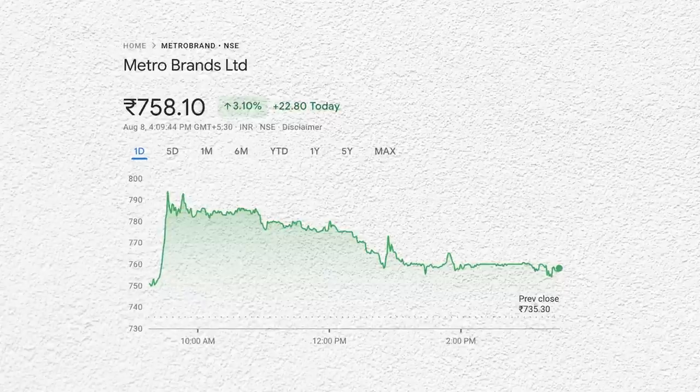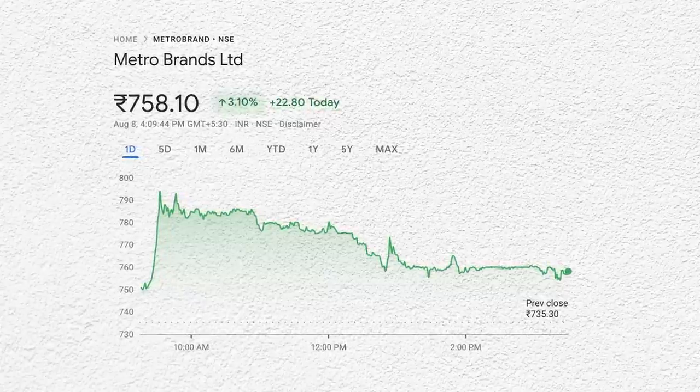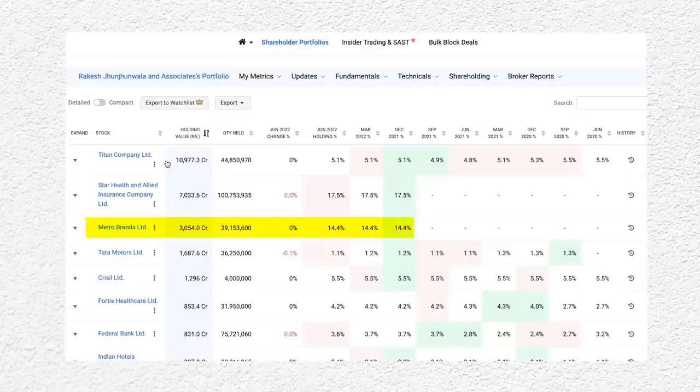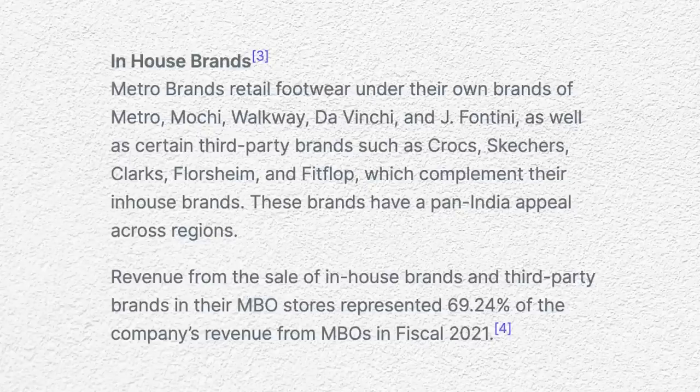Now the second key stock I'm going to speak about is Metro Brand. Mr. Rakesh Jhunjhunwala has taken significant stake in this particular stock. You can see this from the chart here. Here are some key points you need to know about the company. What exactly is it that Metro Brand does? It is a retail company and basically it creates in-house brands. For example, Mochi is a brand, Crocs is a brand. These are some of the prominent brands that are owned by Metro Brands.